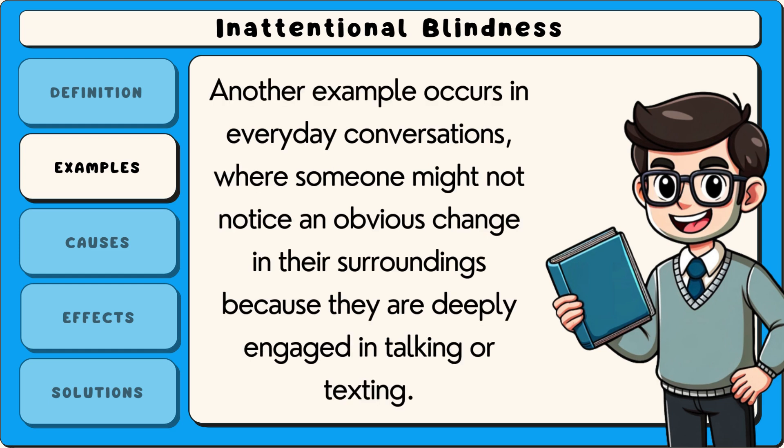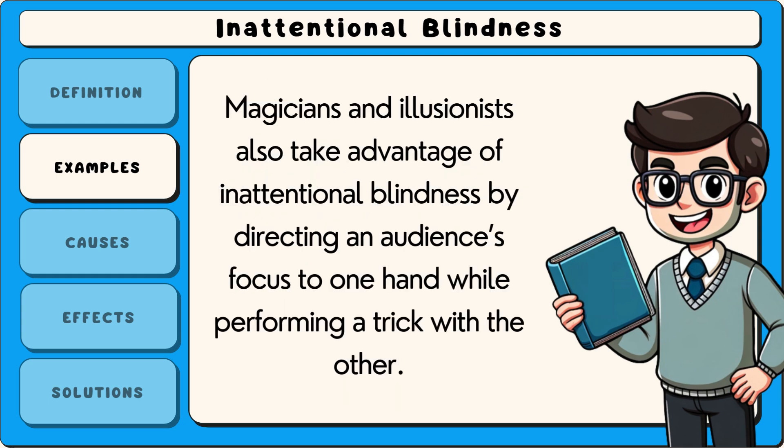Another example occurs in everyday conversations where someone might not notice an obvious change in their surroundings because they are deeply engaged in talking or texting. Magicians and illusionists also take advantage of inattentional blindness by directing an audience's focus to one hand while performing a trick with the other.